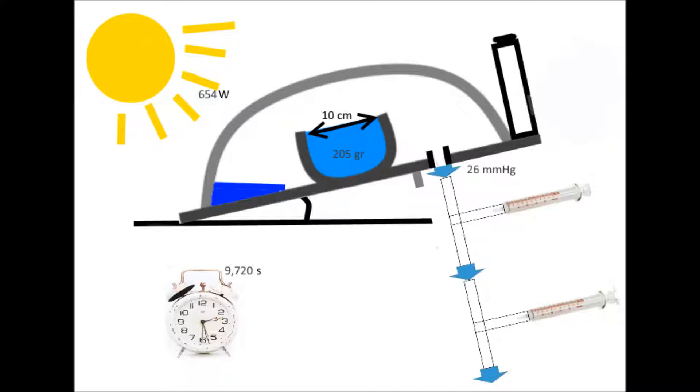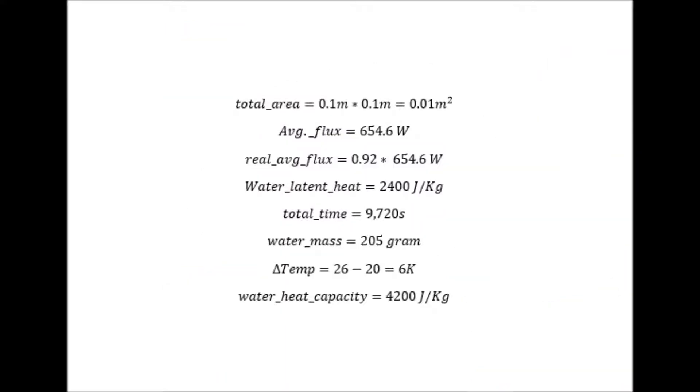We found the vessel area, the sun average flux, the glass transmission factor for light, the water mass, and the time of the experiment. Then we measured the vacuum we can reach and with it the water expected boiling temperature.